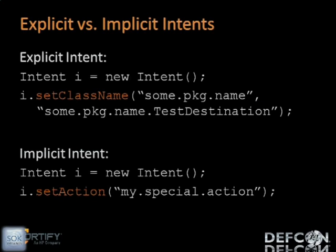To give you a code example: in the first snippet you see the explicit intent, where the class name is being set — that's the destination. This intent should be used when the developer has a specific recipient in mind. In the second code snippet, you can see the implicit intent — the class name is not being set; instead, an action is being set. This should be used when the developer just needs some component to handle a specific task.